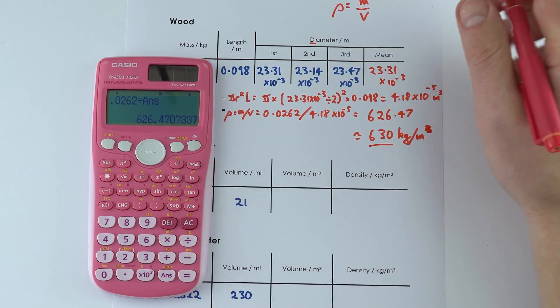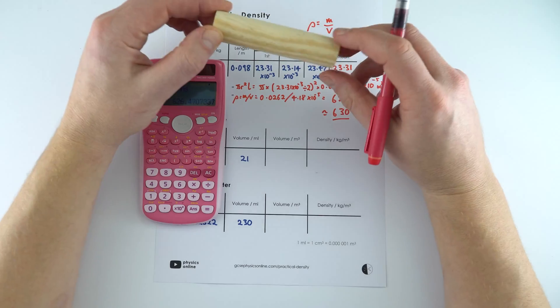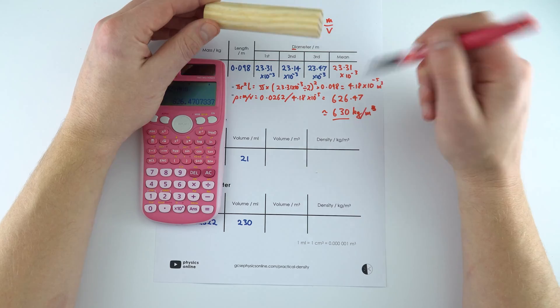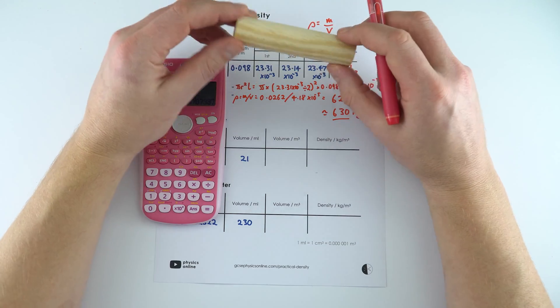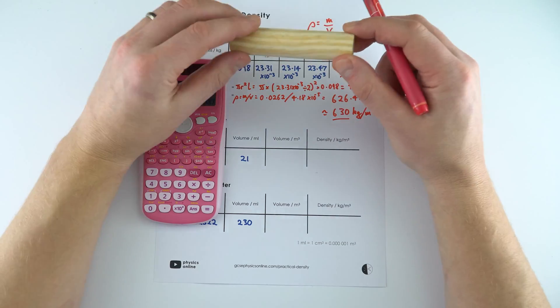So 630 kilograms per cubic meter is the density of wood and that's actually kind of what we'd expect. It's going to be less than a thousand which is the density of water, and that means wood is less dense than water so it floats.